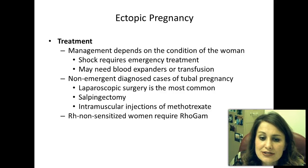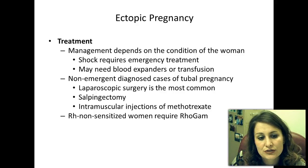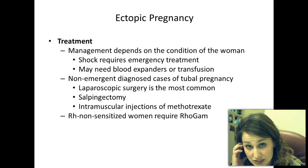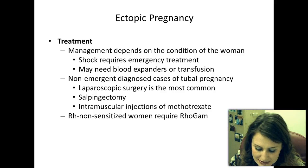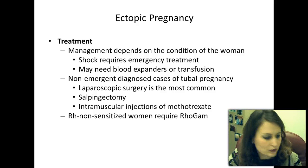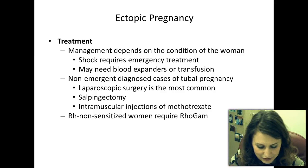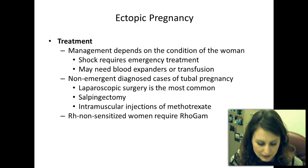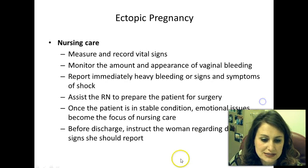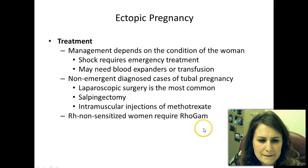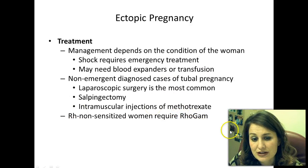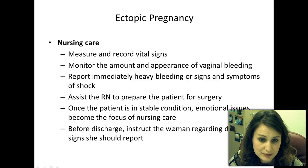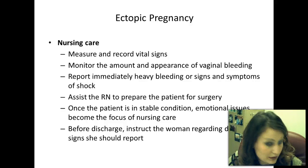For non-emergency diagnosed cases of tubal pregnancy, laparoscopic surgery is most common. Salpingectomy or intramuscular injections of methotrexate may be used. Methotrexate is a chemotherapy drug that stops cell division, halting the growth of the ectopic pregnancy. In any of these situations, if the mother is RH negative, she will require a Rhogam shot, which suppresses her immune system from attacking RH positive blood.